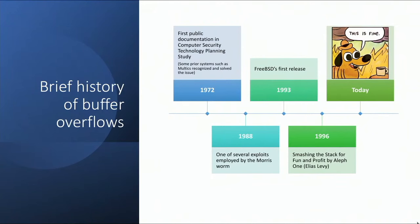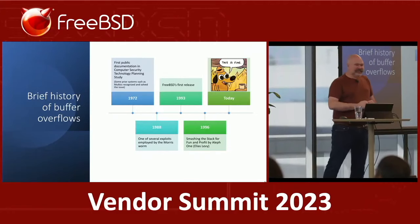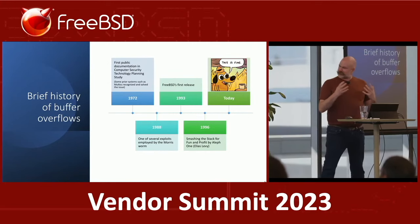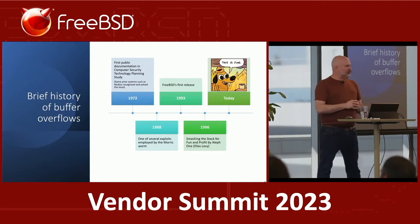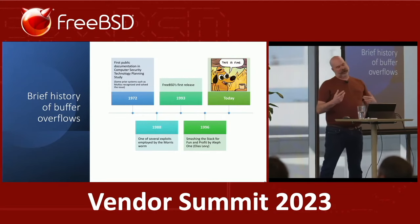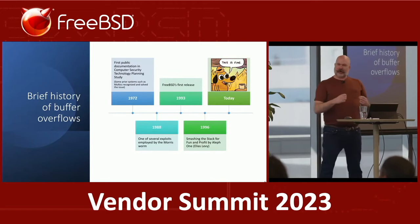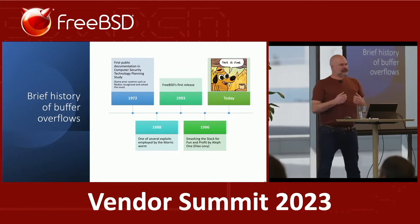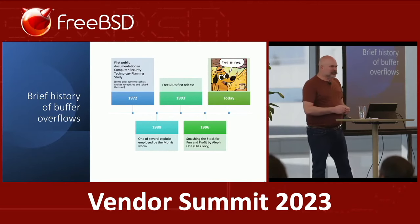According to Wikipedia, buffer overflows as an attack were first documented in 1972 in a document called the Computer Security Technology Planning Study. My boss, Peter Neumann, will tell you that Multics both identified the problem and solved it well before that. There is also some reason to believe, perhaps apocryphally, that the first packet sent on the internet resulted in a buffer overflow and crashed the endpoint.